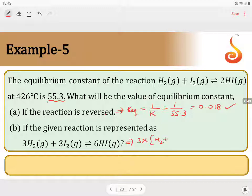The reaction H2 plus I2 gives rise to 2HI, so that entire reaction is multiplied by 3. When a reaction is multiplied by n, the K equilibrium will be K raised to the power of n.